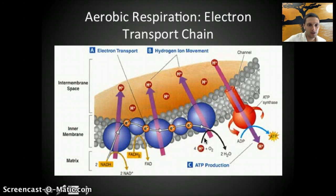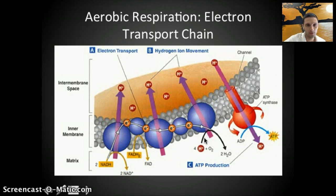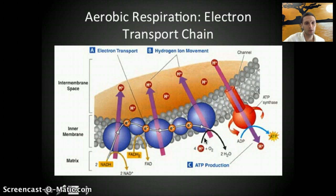The NADH and FADH2 molecules are going to be used in the electron transport chain, which will be the topic of our next video. What you should focus on for now is that those NADH and FADH2 molecules are really important for the electron transport chain to occur. The electron transport chain occurs between the matrix, inner membrane, and inner membrane space of the mitochondria. We'll take a closer look at the structure of the mitochondria and this process in our next and final video on respiration.